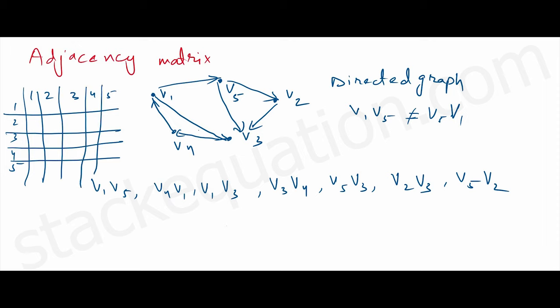Now we fill in the matrix. For V1→V5 we mark 1; for V4→V1 we mark 1; for V1→V3 we mark 1; for V3→V4 we mark 1; for V5→V3 we mark 1; and for V2→V3 we mark 1.